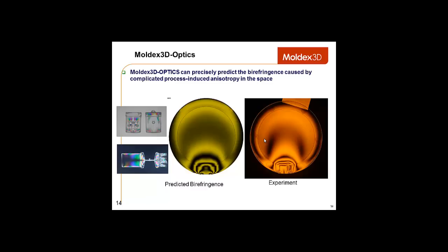Moldex 3D can also precisely predict the birefringence caused by complicated process-induced anisotropy in the cavity. In the pictures below, we can see the predicted birefringence as determined by our solver, and over here, the actual birefringence as determined by an experiment.